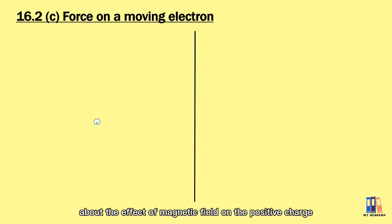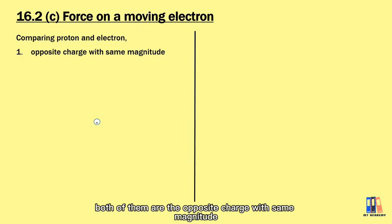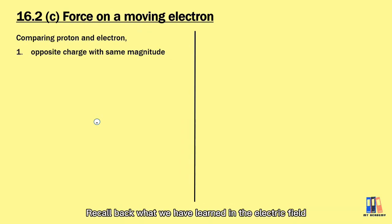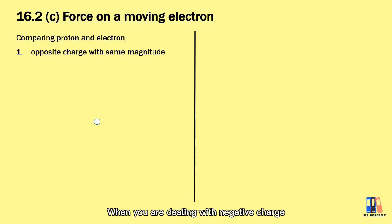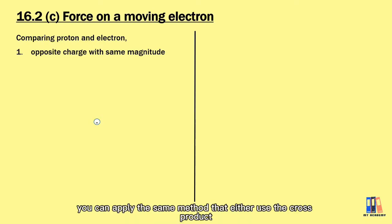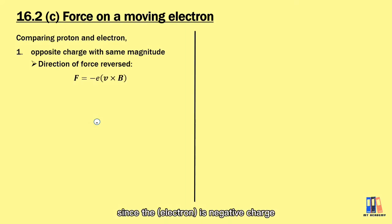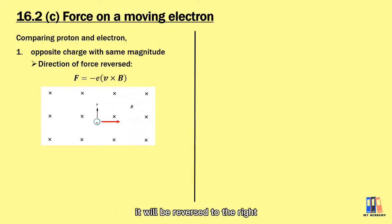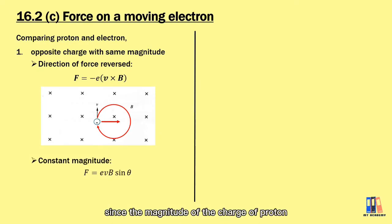Now we'll talk about the negative charge, the electron. Comparing the proton and electron, both have opposite charges with the same magnitude. Recalling what we learned in the electric field, both will show an opposite reaction. Based on F = QVB, when dealing with a negative charge, you can apply the same method — cross product or Fleming left-hand rule — except the direction of the force is reversed. So if the force was to the left, it is reversed to the right, and the electron moves in a clockwise direction. The magnitude of the force remains the same since the magnitude of the charge of the proton and electron are equal.